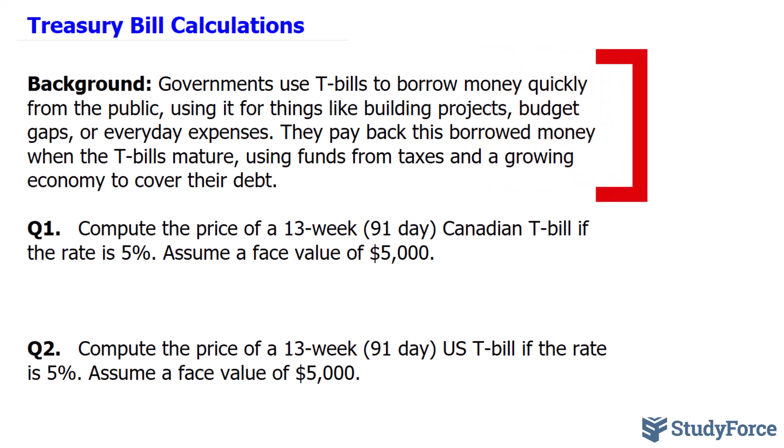Governments use treasury bills, known as T-bills, to borrow money quickly from the public, using it for things like building projects, budget gaps, or everyday expenses. They pay back this borrowed money when the T-bills mature, using funds from taxes and a growing economy to cover their debt.